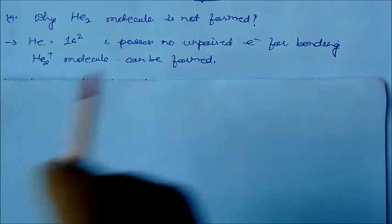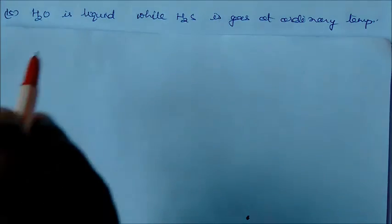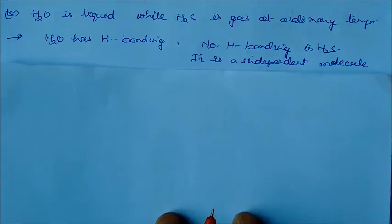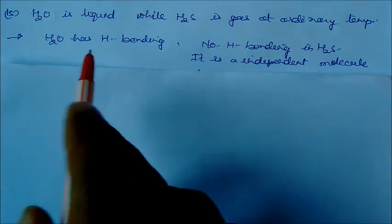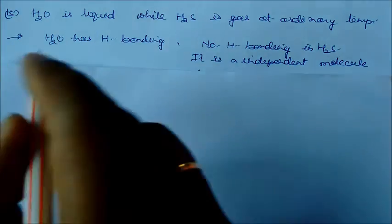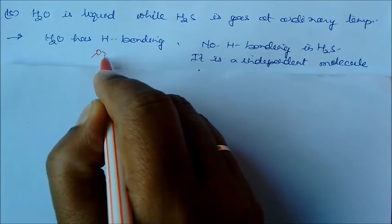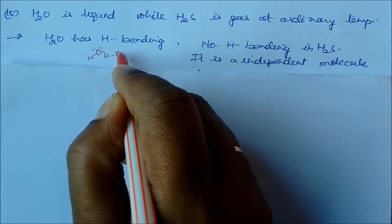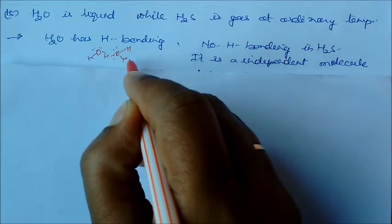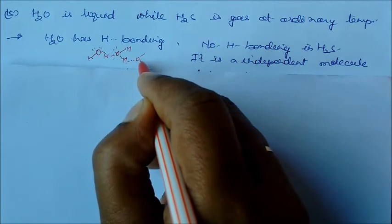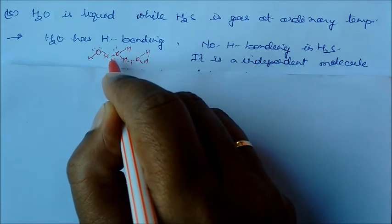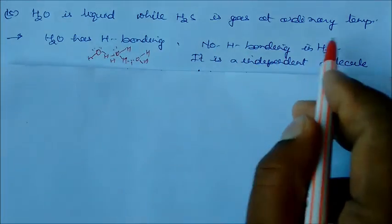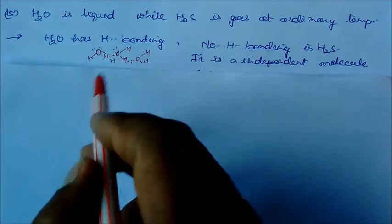Water is liquid while H2S is gas at ordinary temperature. It is very simple. Actually water has hydrogen bonding - water bonds with other molecules by hydrogen. So this is hydrogen bonding. Suppose this is a lone pair bonded with another oxygen like this one. So again this is bonded with hydrogen. These are hydrogen bonding. But this hydrogen bonding is absent in H2S, so it is an independent molecule. This is an associated molecule.